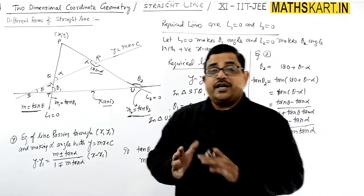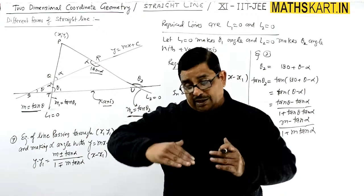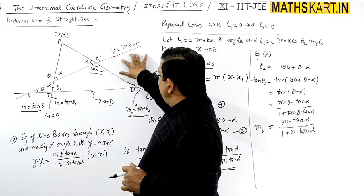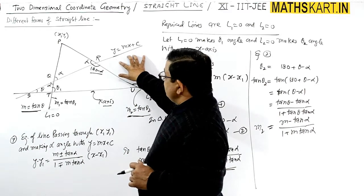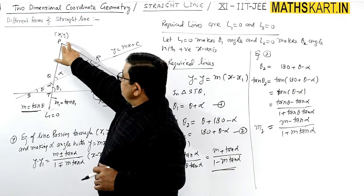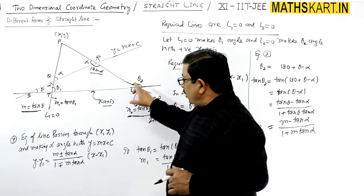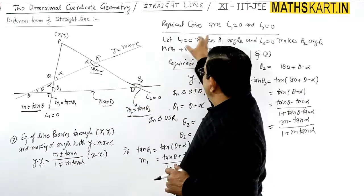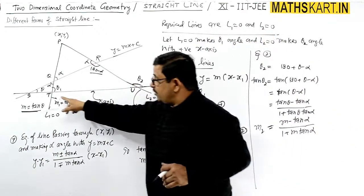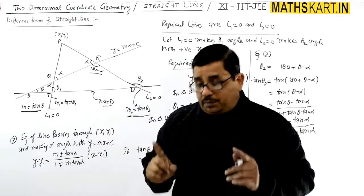In summary, given line y = mx + c passing through point (x1, y1) at angle alpha, two lines L1 and L2 are possible. The two slope equations derived give us the two required line equations. Now let's apply these to specific questions.